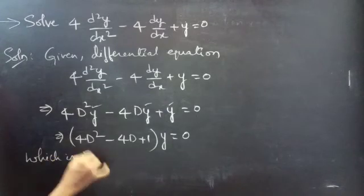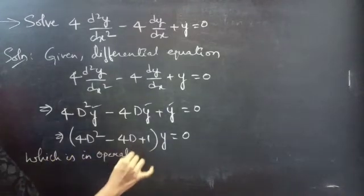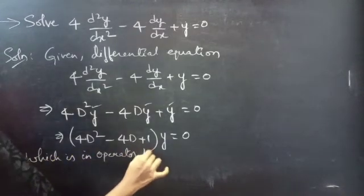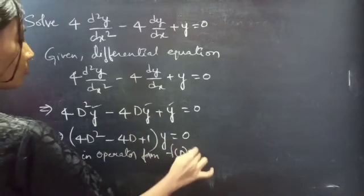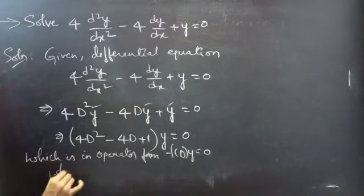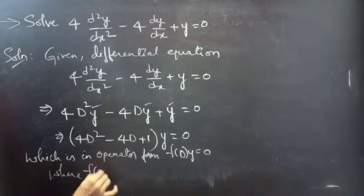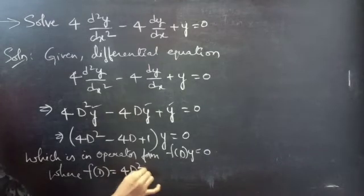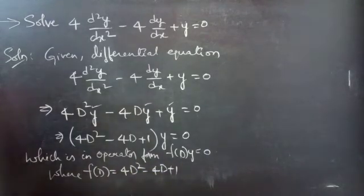This is in operator form: f(D) into y equals to 0. By comparing these two equations, we will get f(D) equals to 4D² minus 4D plus 1.